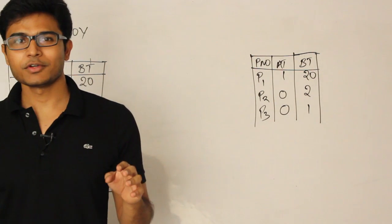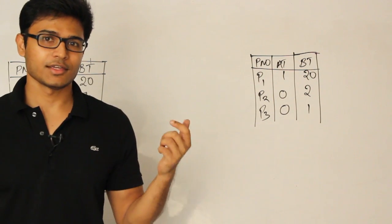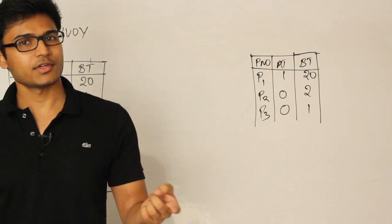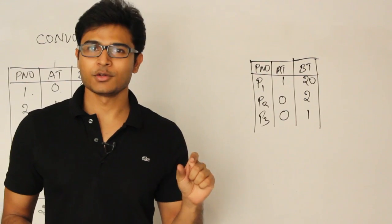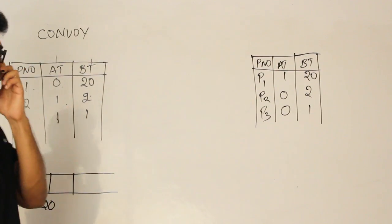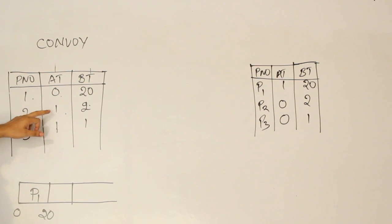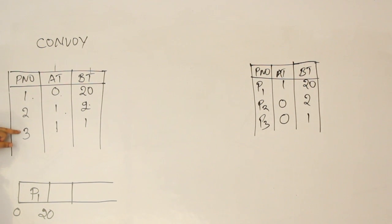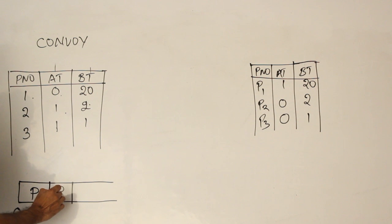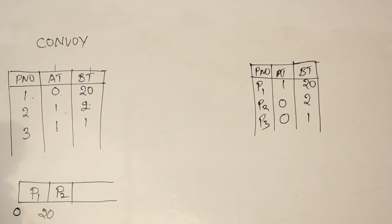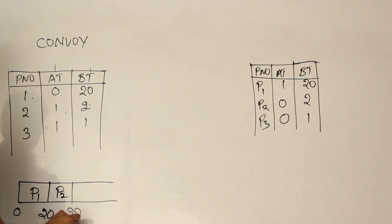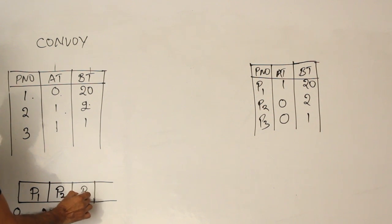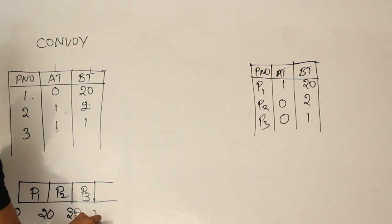There is no relation between the Convoy effect and processes arriving at the same time — that is independent. Since P2 and P3 arrive at the same time, we schedule P2 first. Its burst time is 2 units, so the total time reaches 22. Then P3 is scheduled with burst time 1 unit, giving a total of 23.